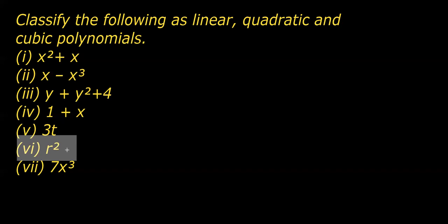As you can see here, there's only one term and it's a variable. The power of this variable is two, so it should be considered as a quadratic polynomial. Coming to the last polynomial, we can see it's a single term monomial.